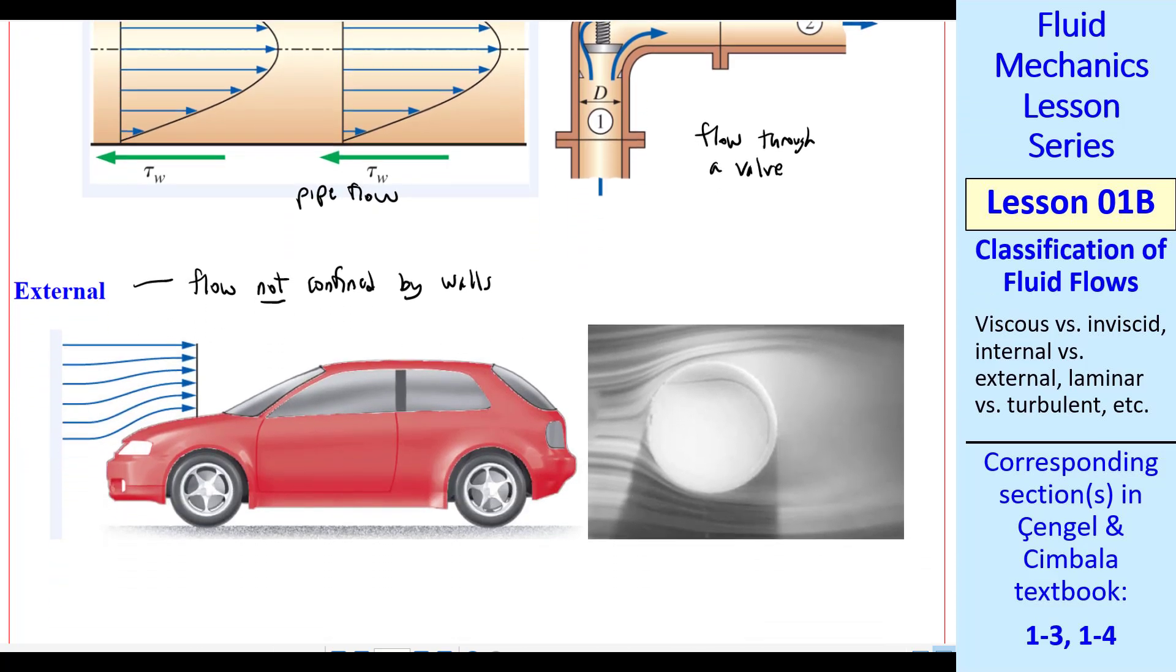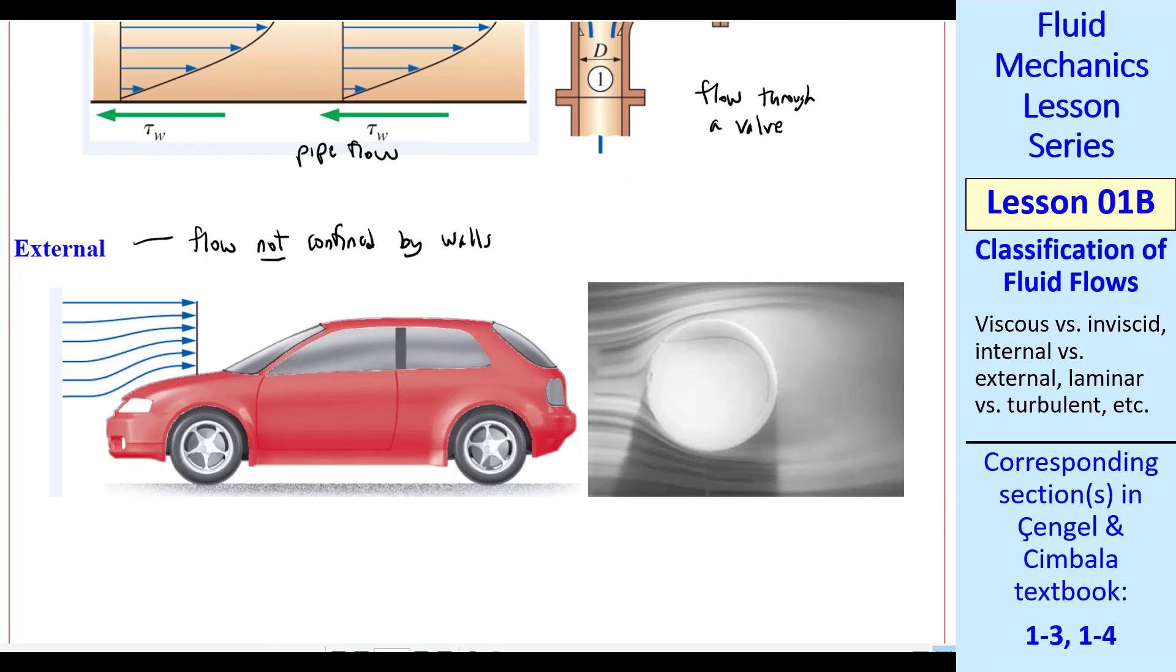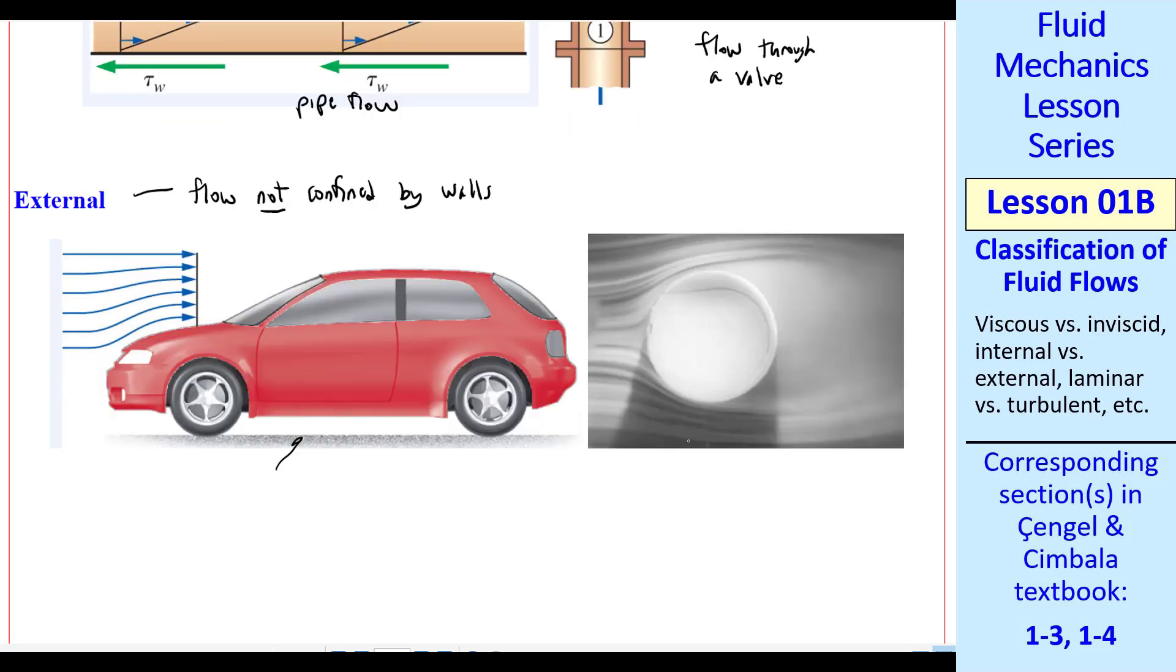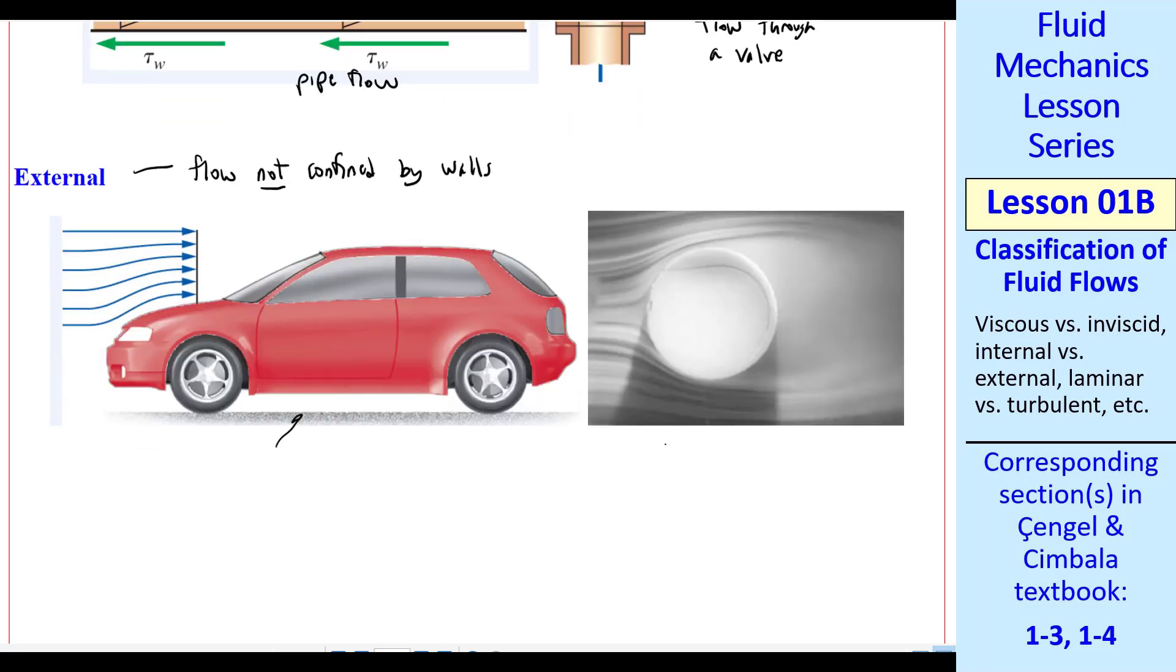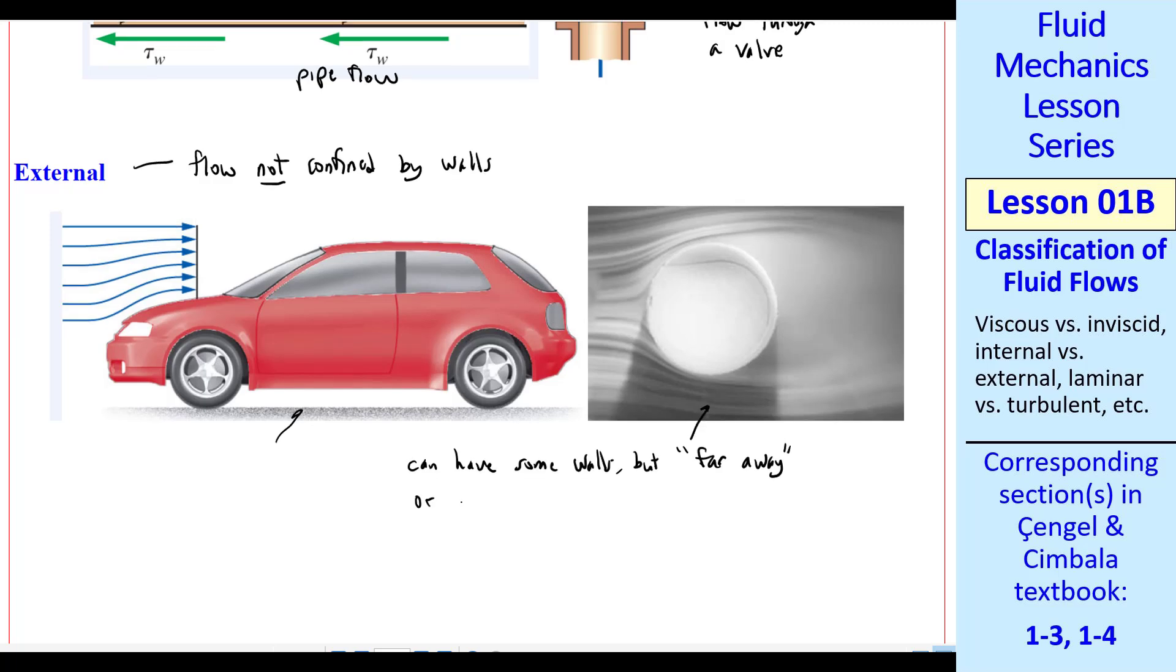That doesn't mean necessarily that there's no walls in the flow. For example, we'd consider flow over a car an external flow, even though there's a ground. That's a wall. Even in a wind tunnel, here's a tennis ball in a wind tunnel. There's going to be walls that define the test section of the wind tunnel. But as long as those walls are far away, they don't affect flow over this ball. So we would still call this an external flow. So you can have some walls, but they're far away as in that case, or simply part of the flow field as in the car case. Unless the car is flying off a cliff, it always has a wall underneath it.